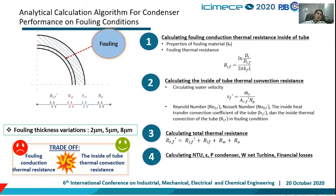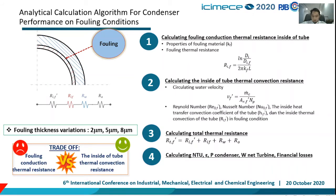This is the analytical calculation algorithm for condenser performance under fouling conditions. We use three fouling thickness variations: 2 micrometers, 5 micrometers, and 8 micrometers. On one hand, fouling conditions increase the conduction thermal resistance, but on the other hand, the inside-tube thermal convection resistance will decrease. These two opposing effects will be examined in this paper to find out which one is more significant to condenser performance.